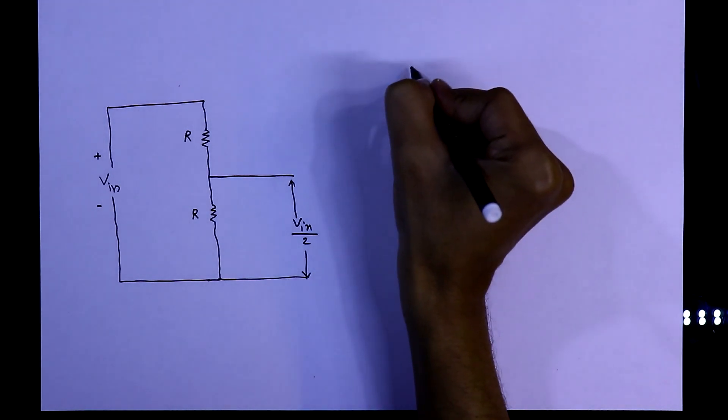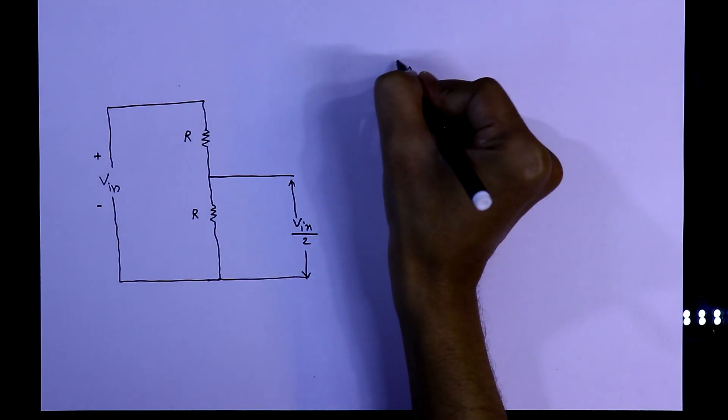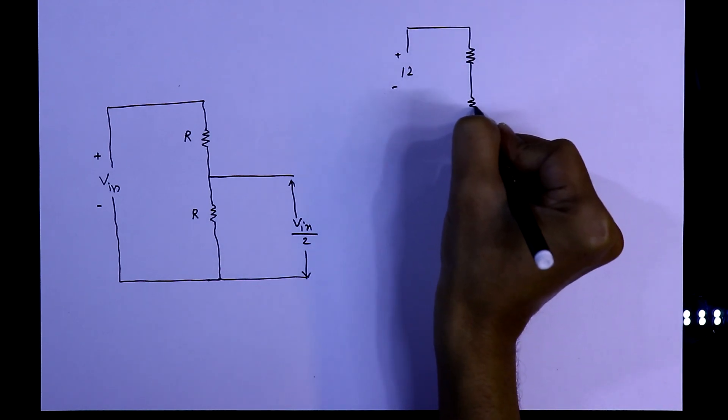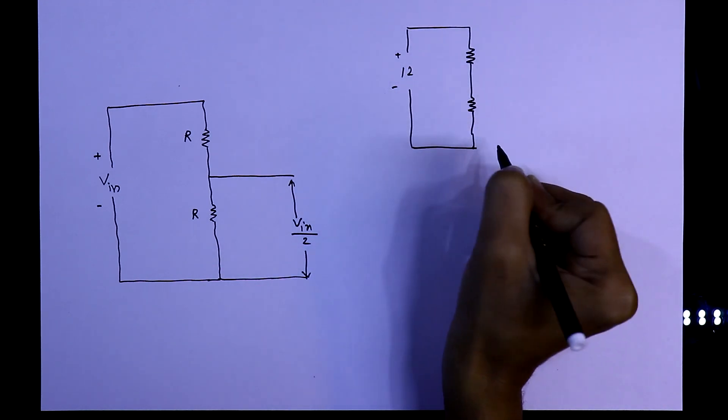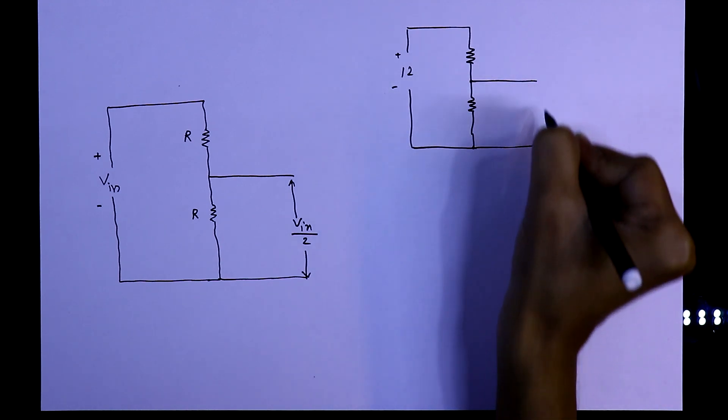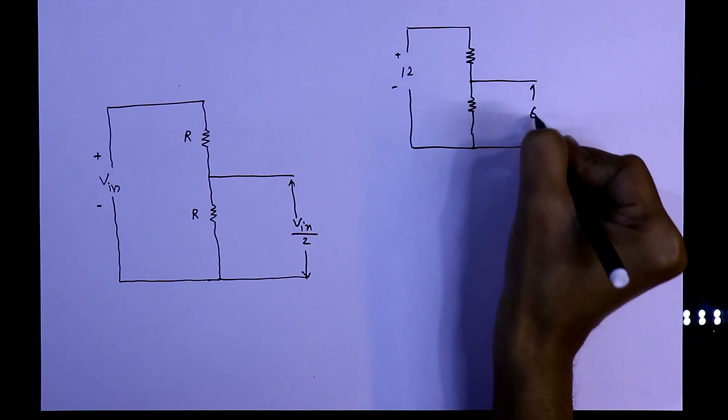For an example, if we have 12 volt power supply, we have connected two resistors across the voltage. Then from the ground side, at this point the voltage will be 6 volt.